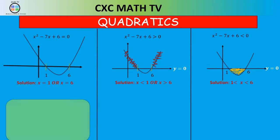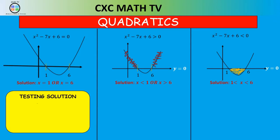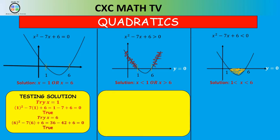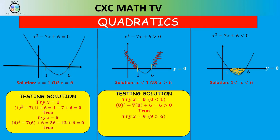To verify: substituting x = 1 and x = 6 into the equation gives 0, satisfying it. For the inequality greater than 0, the solution region is x < 1 or x > 6. Substituting x = 0 gives 0 - 0 + 6 = 6, which is greater than 0. Trying x = 9 gives 81 - 63 + 6 = 24, which is also greater than 0. The solution region is confirmed correct.